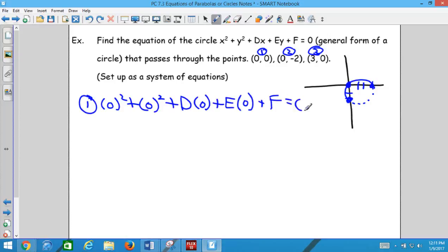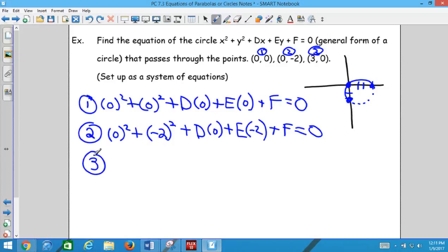And then equation two is 0² + (-2)² + d(0) + e(-2) + f = 0. And then equation three is 3² + 0² + d(3) + e(0) + f = 0.